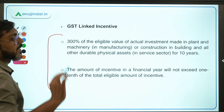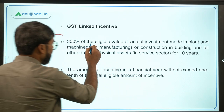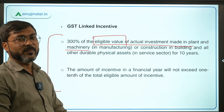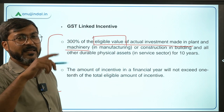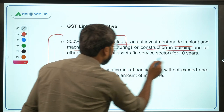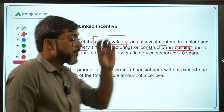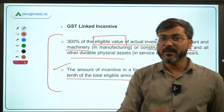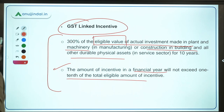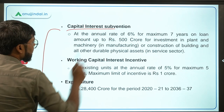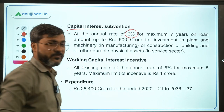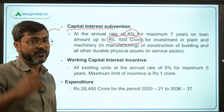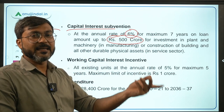Another incentive is the GST-linked incentive at 300% of the eligible value of actual investment made in plant and machinery in the manufacturing sector, or construction of buildings and other durable physical assets in the service sector. The eligible value definition has not been declared yet. The amount of incentive in a financial year will not exceed one-tenth of the total eligible amount of incentive. Capital interest subvention will also be provided at 6% per annum for a maximum period of 7 years on loans up to Rs. 500 crore.